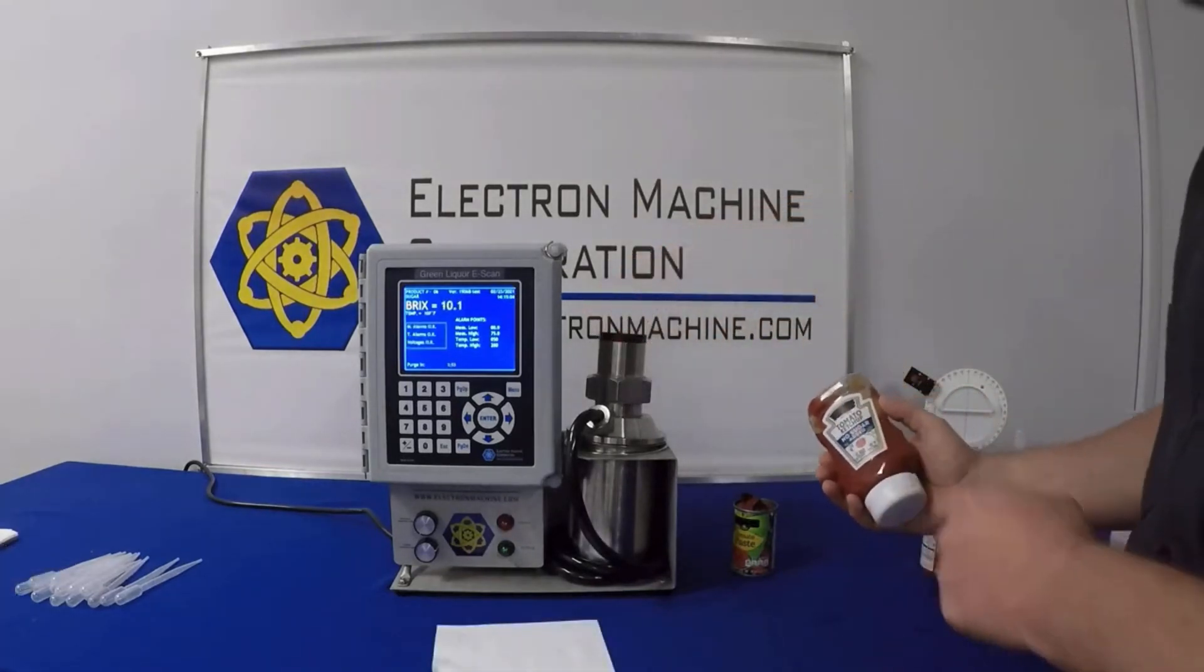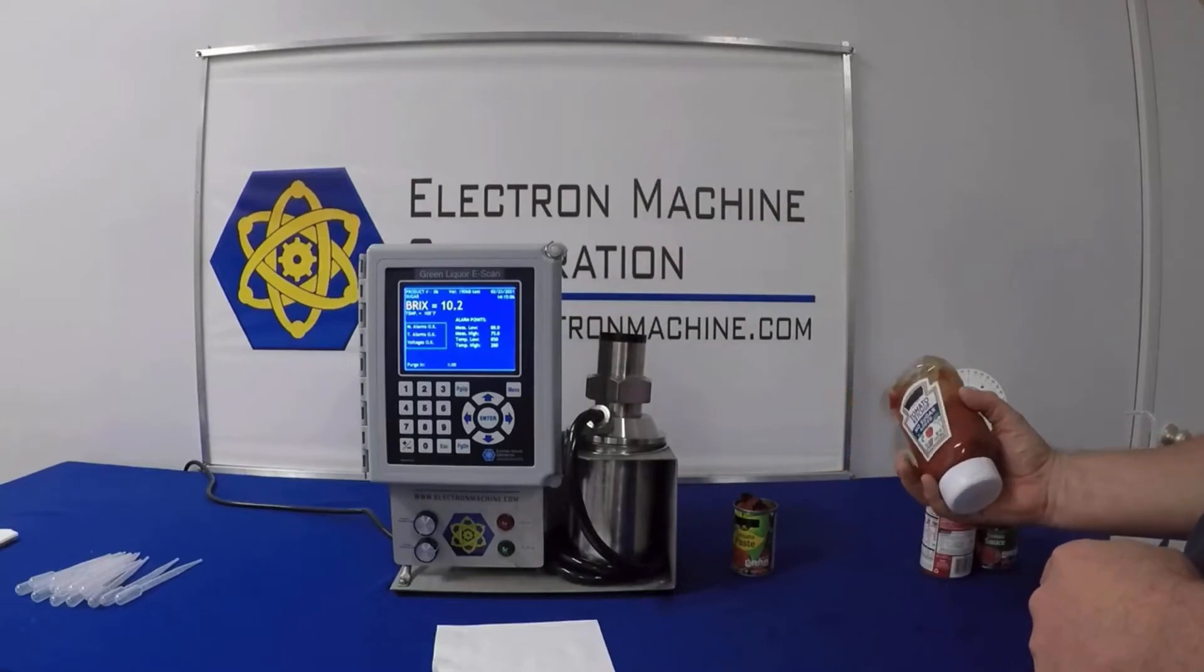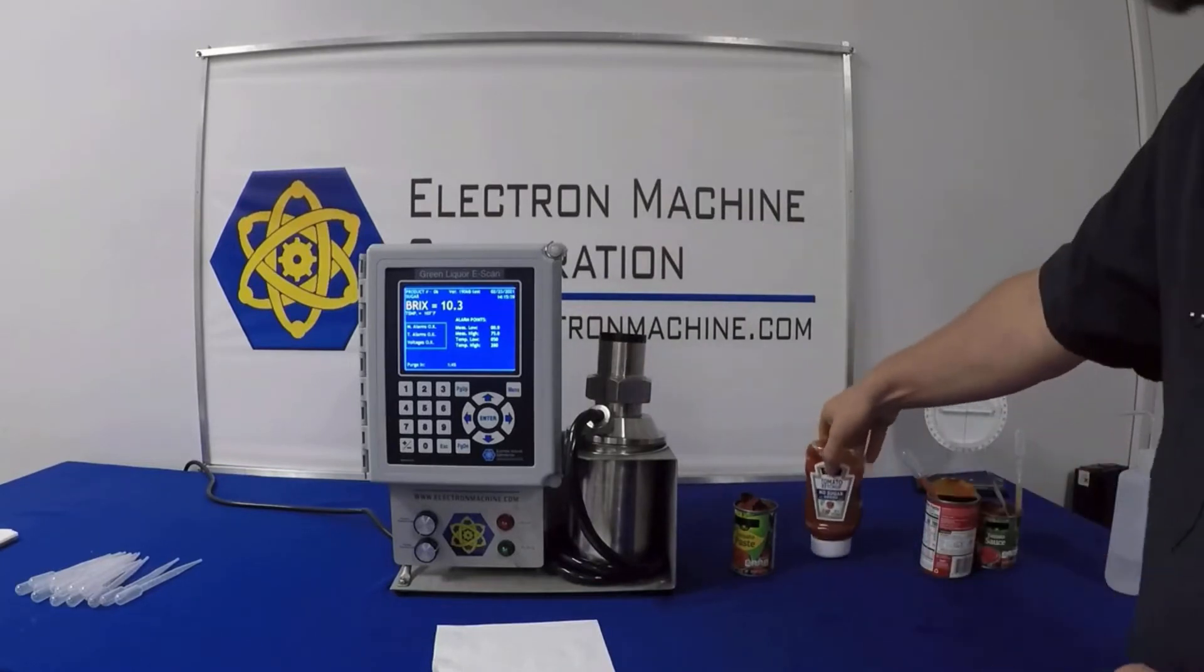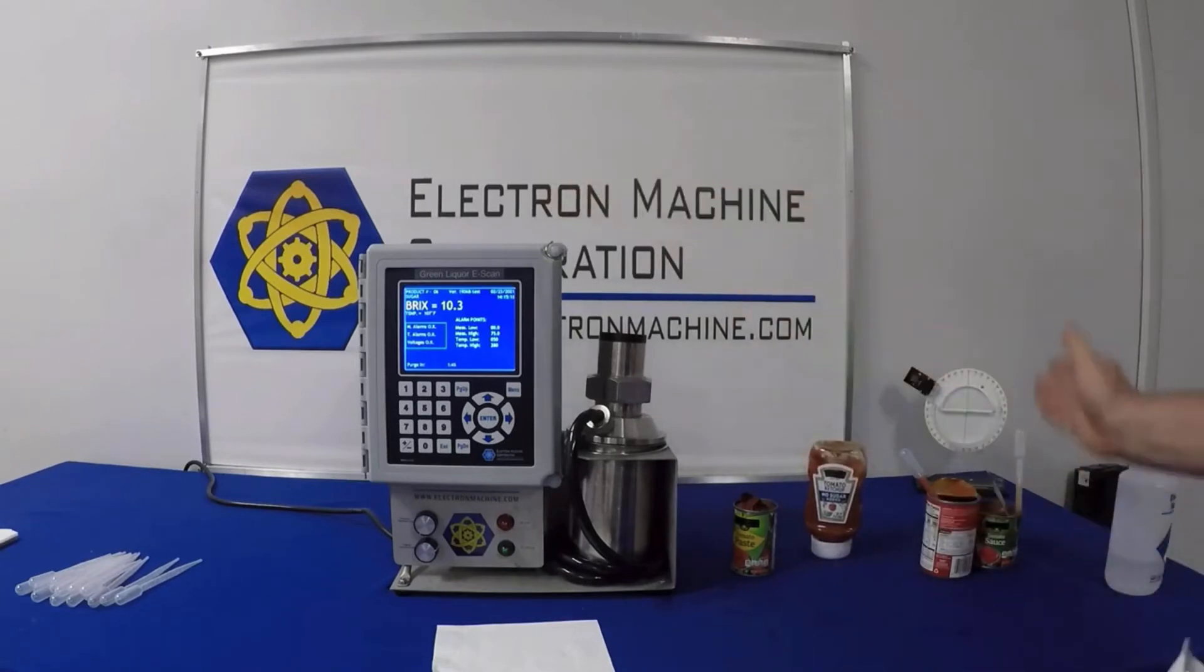This is no sugar added tomato ketchup. As you can see, it does give a different reading. So far we have been able to tell the difference between a condensed soup, a tomato sauce, and a ketchup.